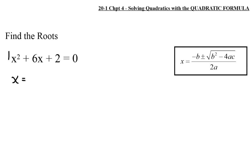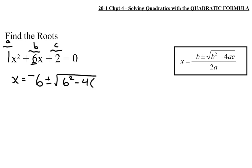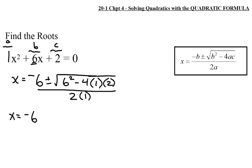So what does x equal? The a value is 1, b value is 6, c value is 2. We have negative b, which is negative 6, plus or minus the square root of 6 squared — no brackets needed since it's a positive 6 — minus 4 times a (which is 1) times c (which is 2), all over 2 times the a value of 1.